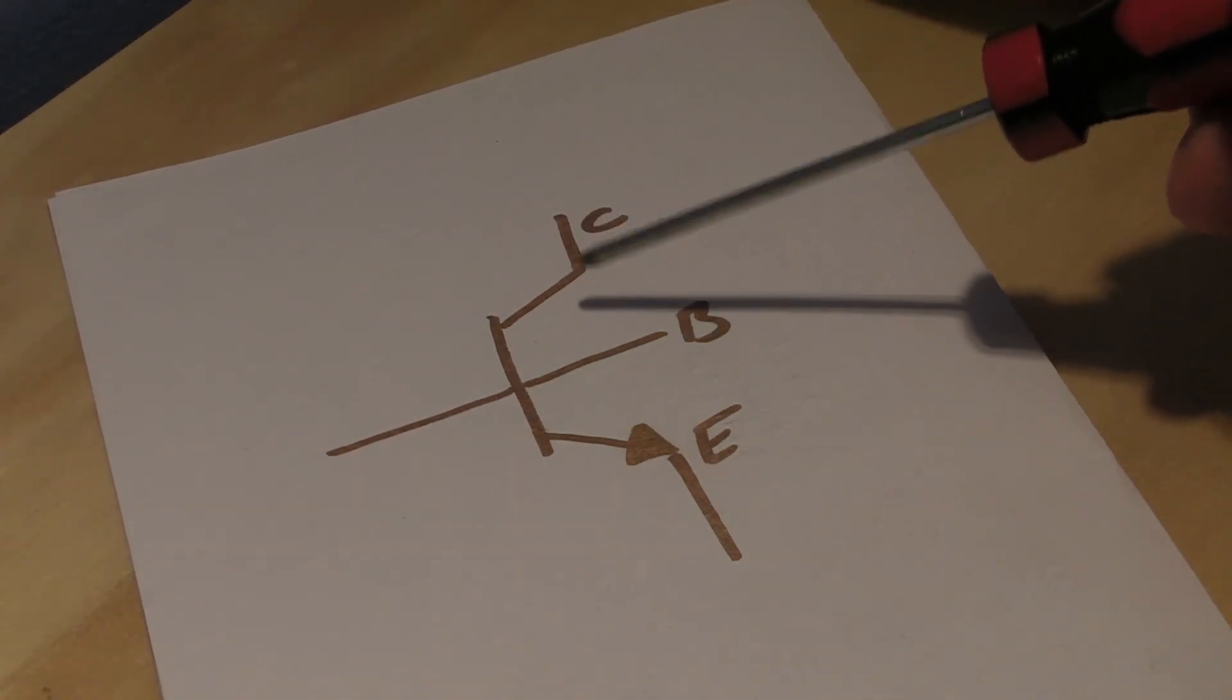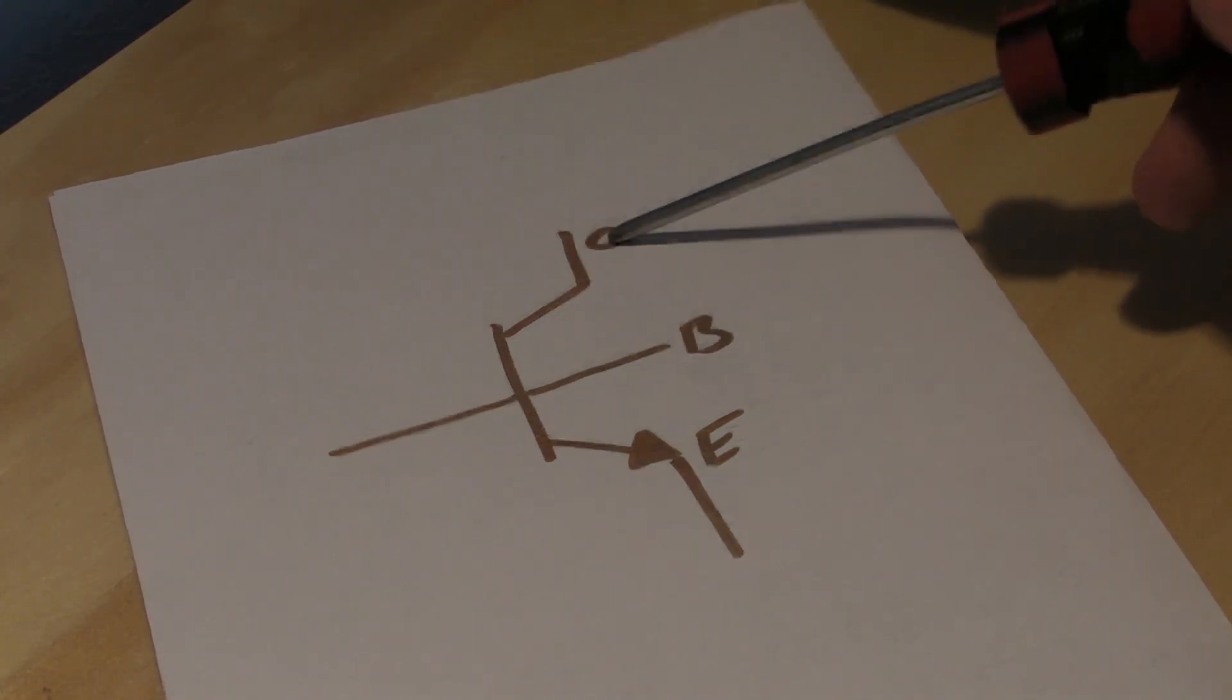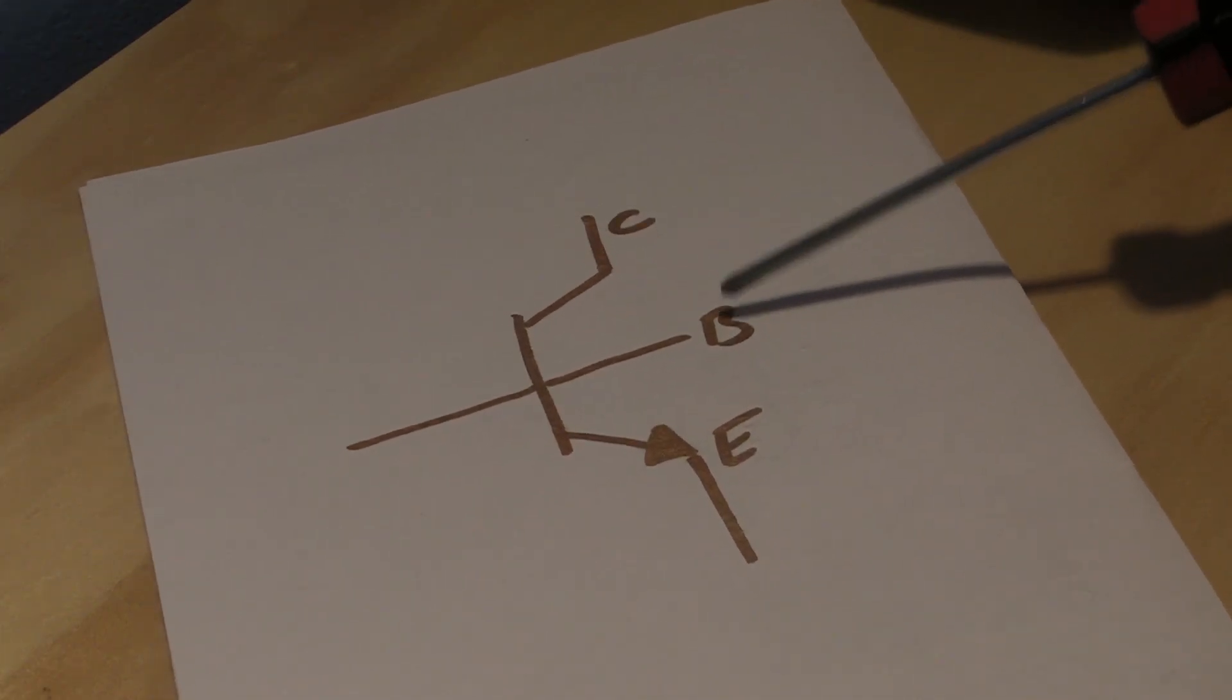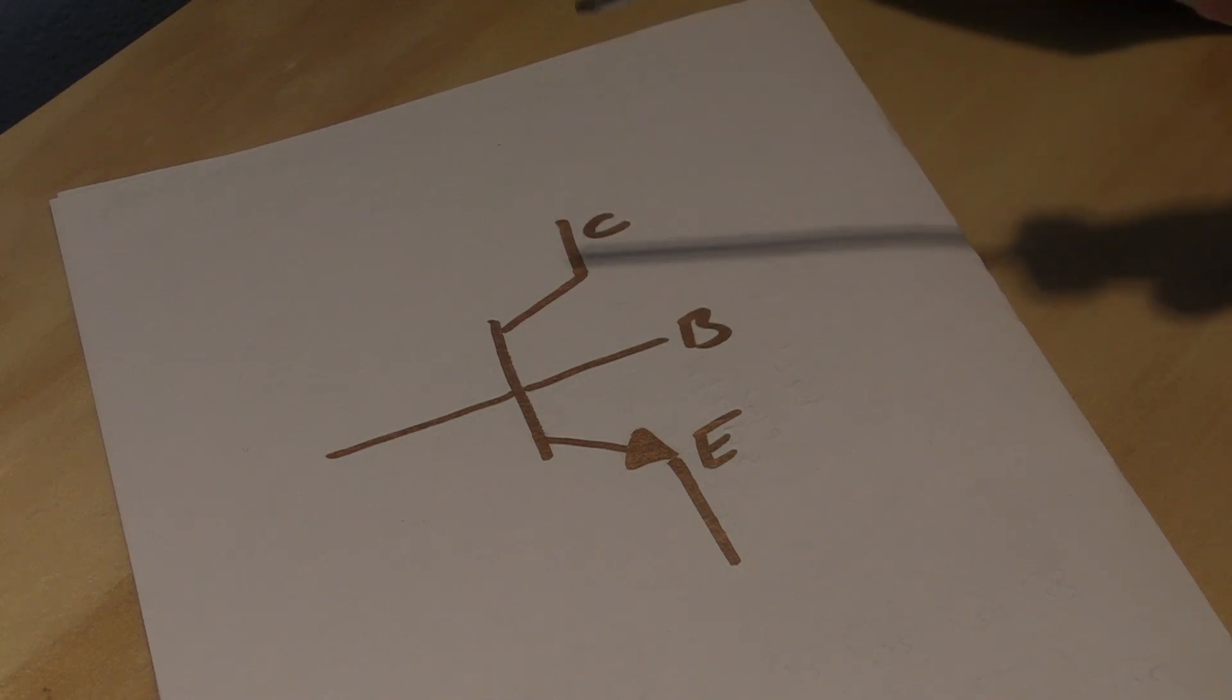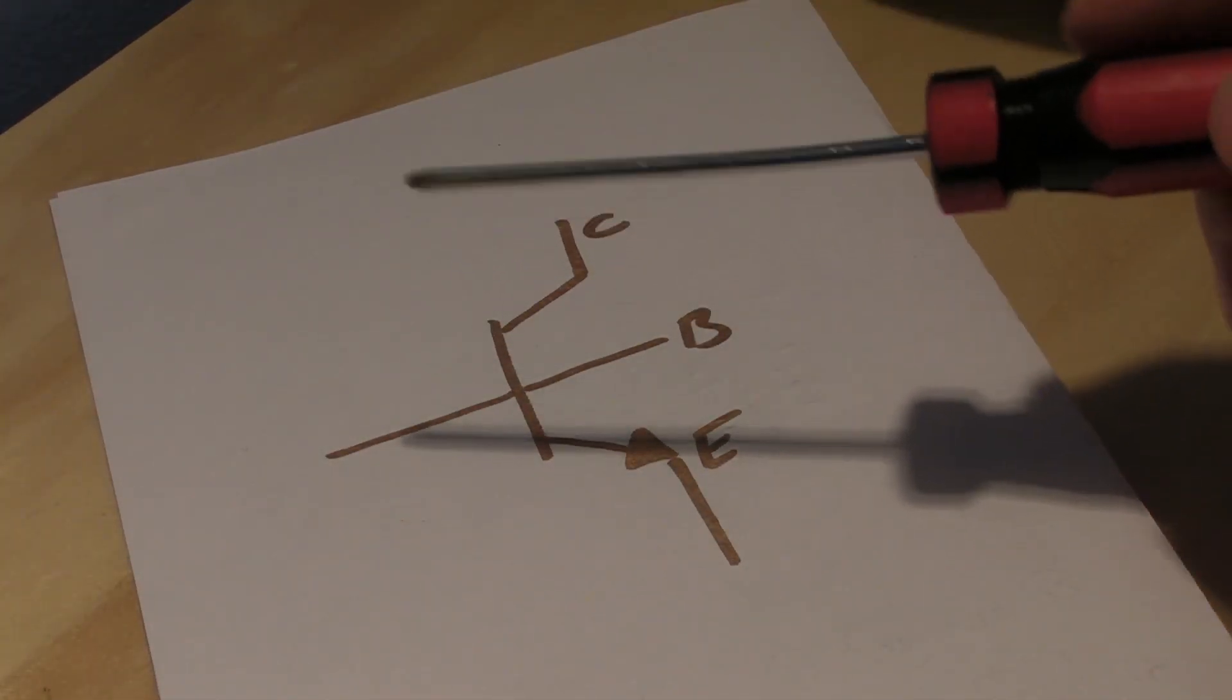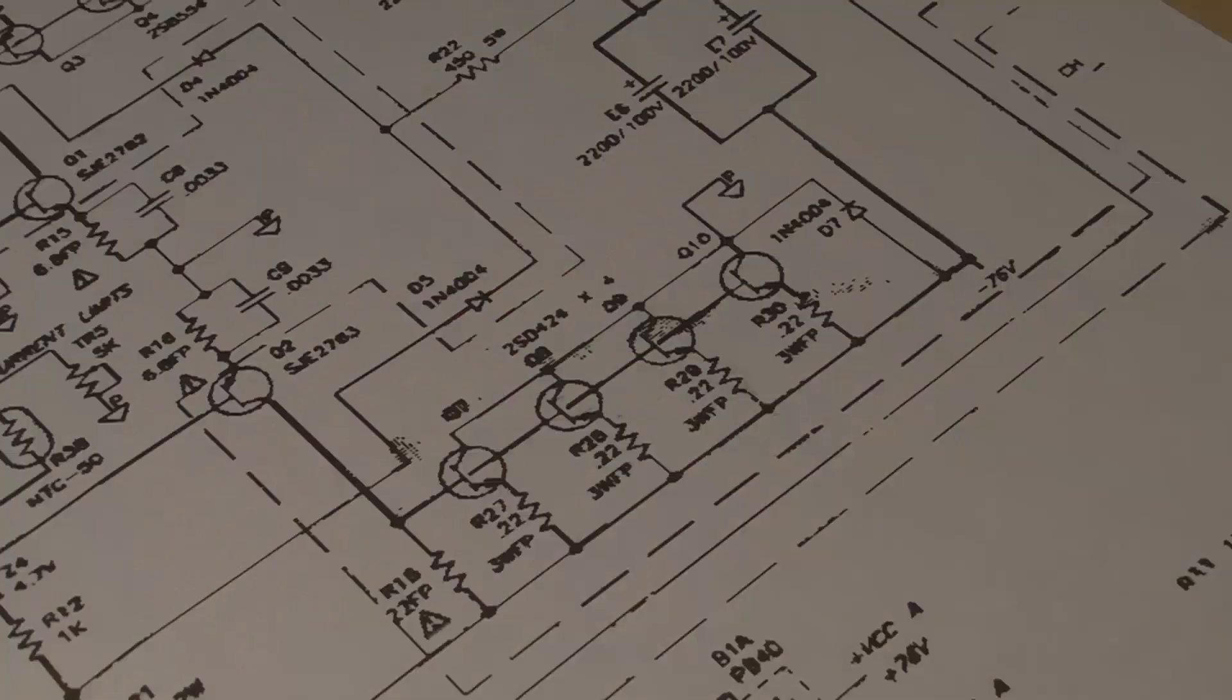Now if this is what happened, and it usually is, you're in luck, this is going to be pretty easily fixable. Now what can happen is the collector shorts to the base, which is worse, because now basically you're allowing the full maximum voltage from the collector into the base, which is going to flow backwards into all the other circuitry, which is not designed to handle 76 volts or whatever voltage your amplifier is.